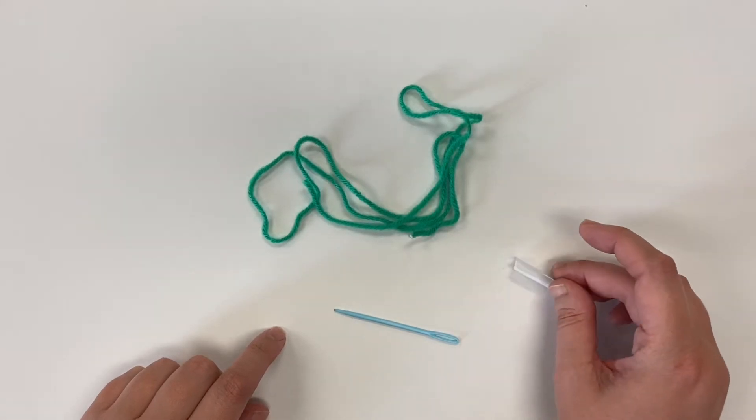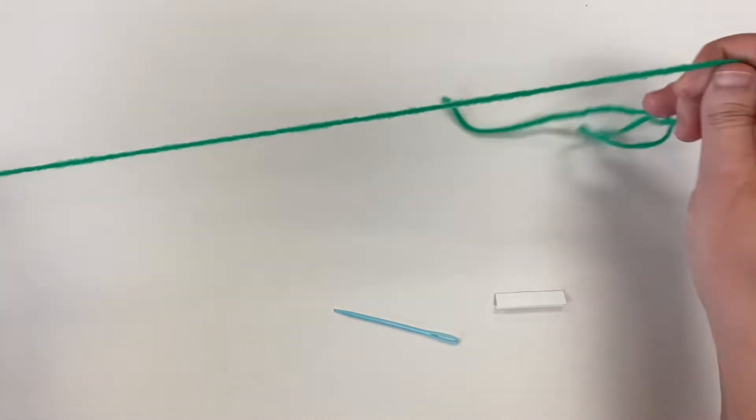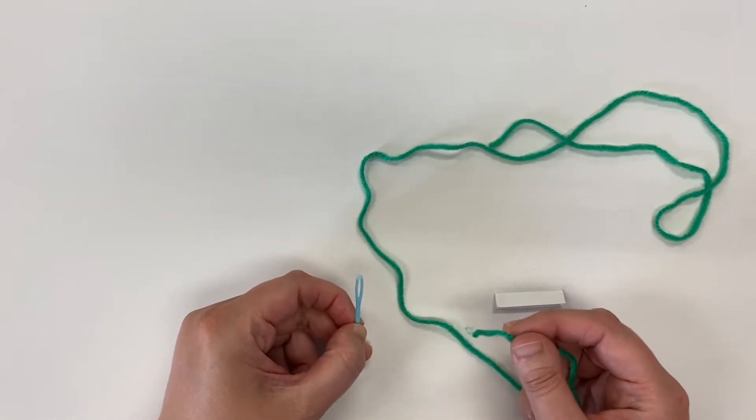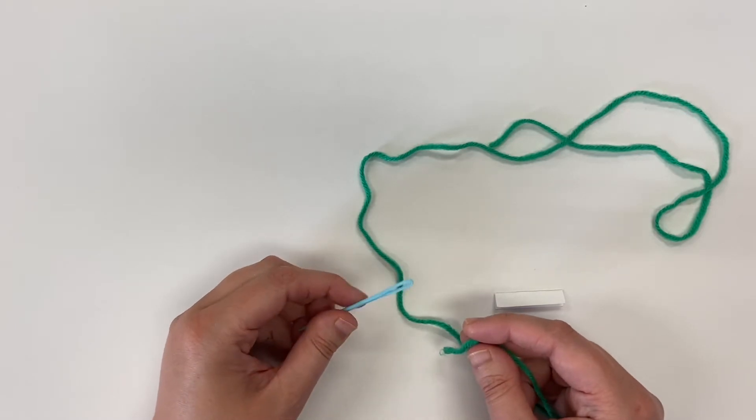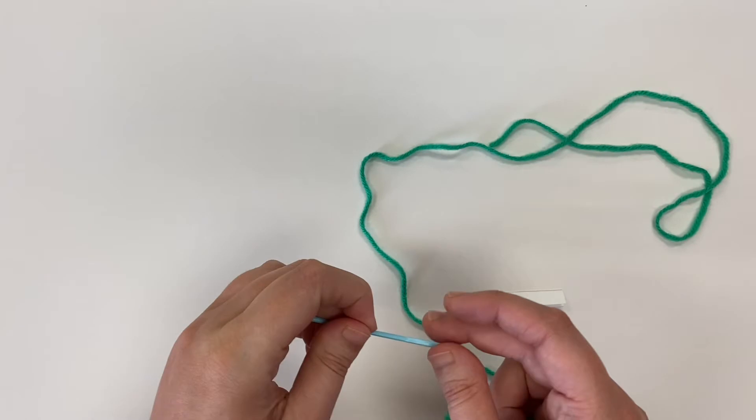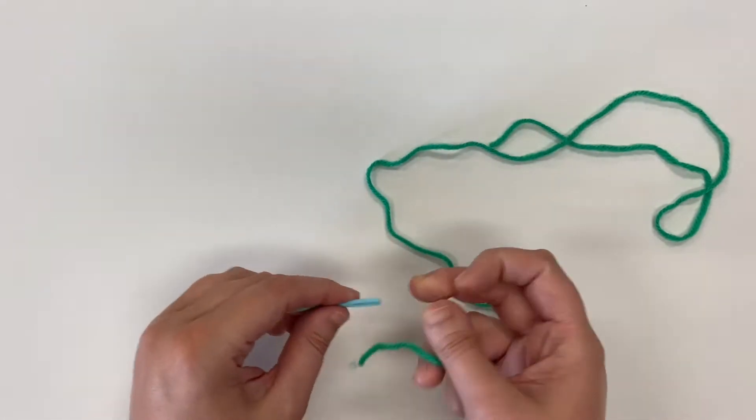Our next step to make our rainbow necklace is to put our yarn onto our needle. This step is important because it'll be so much easier to put the beads onto the yarn if we have something that's strong enough to go straight through those beads.